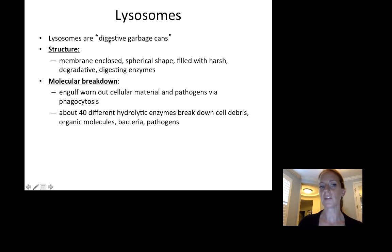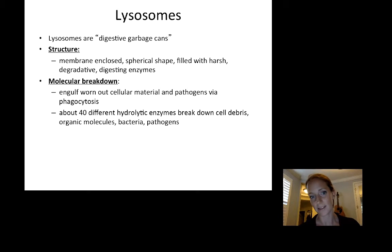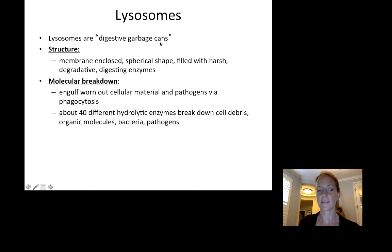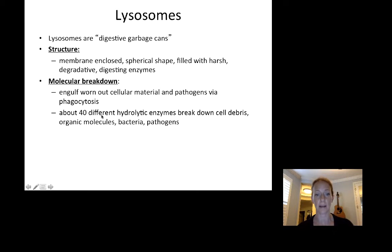One example of a specialized vesicle is a lysosome — a large spherical vesicle filled with harsh, degradative digesting enzymes, enclosed in a membrane but much larger than a typical vesicle. Lysosomes are the garbage cans of the cell. Any worn-out cellular material or pathogens such as bacteria that are brought into the cell can be broken down inside the lysosome. There are about 40 different hydrolytic or breakdown enzymes that will break down cell debris, molecules, bacteria, and pathogens.